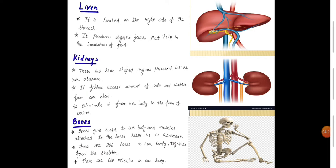Bones are also very important in our body. Bones keep safe to our body and muscles attached to the bones help us in movement. There are 206 bones in our body together from the skeleton. There are 600 muscles in our body.